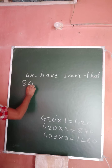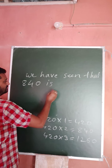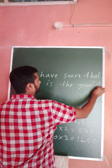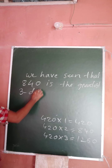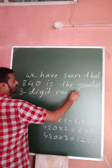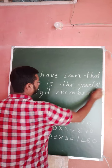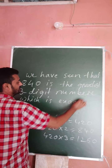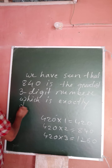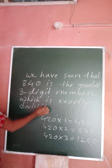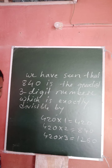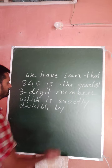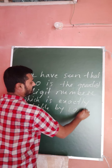We have seen that 840 is the greatest three-digit number which is exactly divisible by the given numbers 10, 12, and 14.